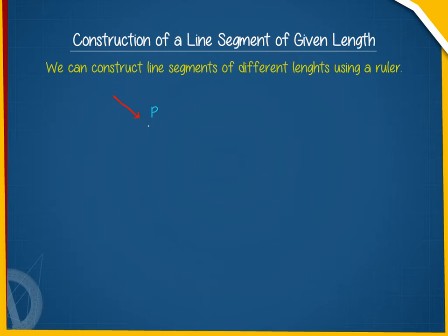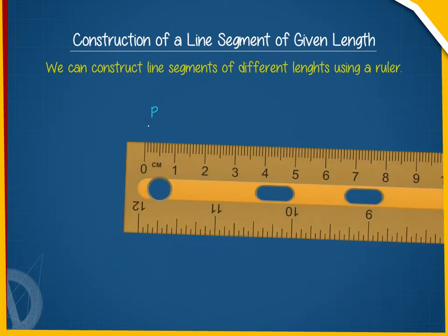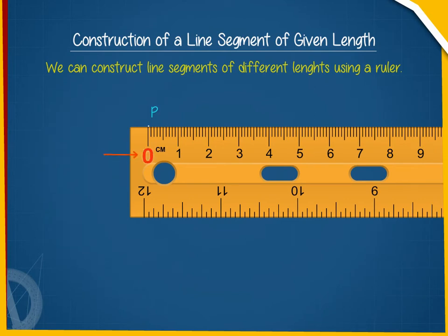you should first mark a point P on a sheet of paper. Now, place a ruler, keeping the zero mark of the ruler at P. Next, mark a point Q on the ruler at the mark of 5 cm.